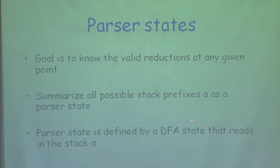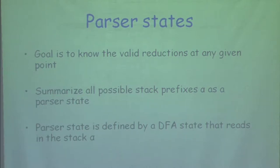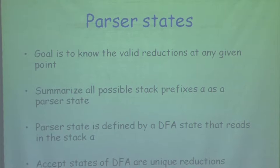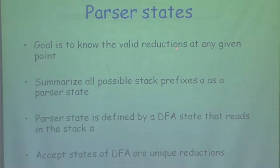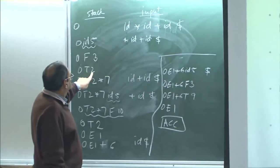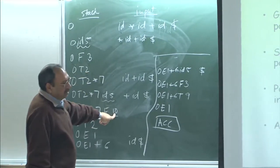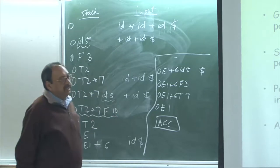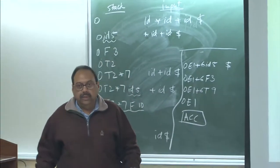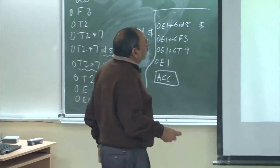Parser states are actually defined by a finite state machine that reads the stack. The maximum stack height is twice the number of input tokens plus one — in the worst case all shifts happen before the first reduction. Each state summarizes all possible stack prefixes (viable prefixes) at that parser state. State 0 means the stack is empty. This is interesting: although we are parsing context-free languages and might expect push-down automata, the viable prefixes form a regular language, so a finite state machine suffices.